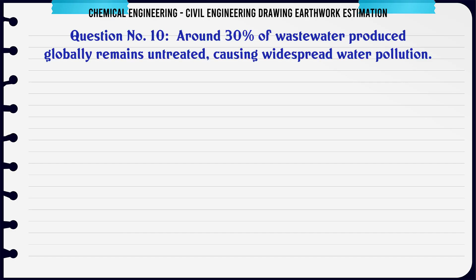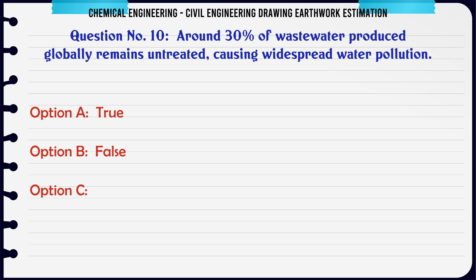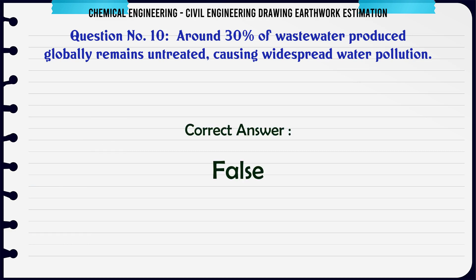Around 30% of wastewater produced globally remains untreated, causing widespread water pollution. A. True. B. False. The correct answer is: False.